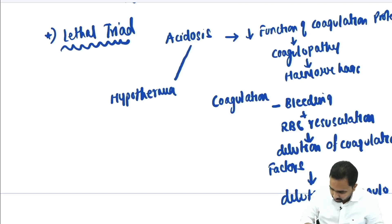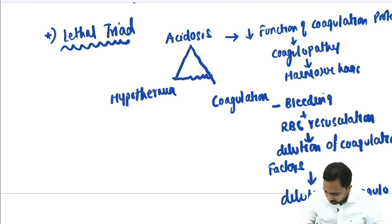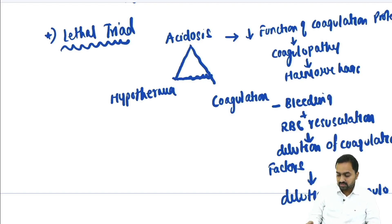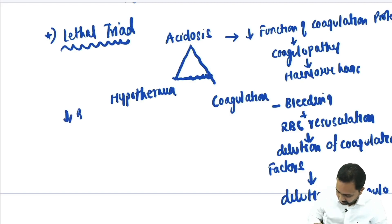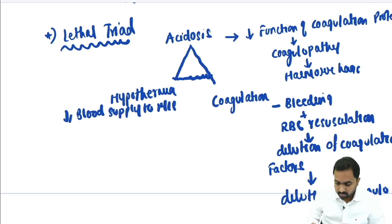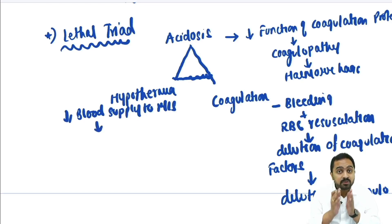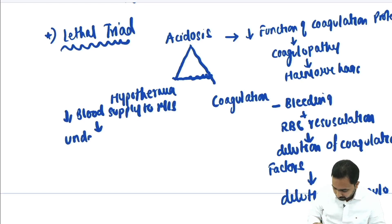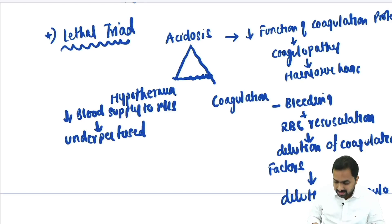This is the lethal triad. Regarding hypothermia: there is decreased blood supply to the muscle, as a result of which it becomes underperfused and is unable to generate heat.